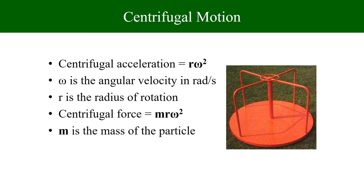We can calculate centrifugal acceleration using the formula omega squared times r. Omega is the angular velocity, expressed in radians per second. R is the radius — in this case, from the center to the borderline. The centrifugal force is calculated as omega squared r multiplied by the mass of the object. In the case of the merry-go-round, the mass equals your body weight. In a centrifuge, we are separating very small particles, so their mass becomes very insignificant.